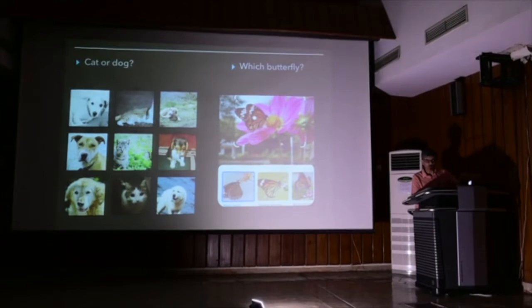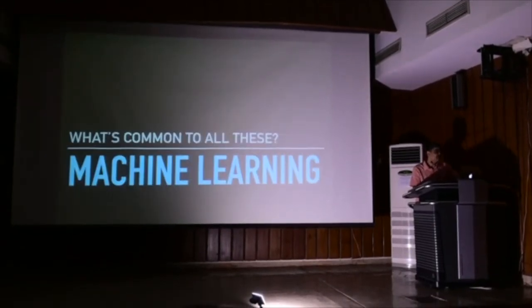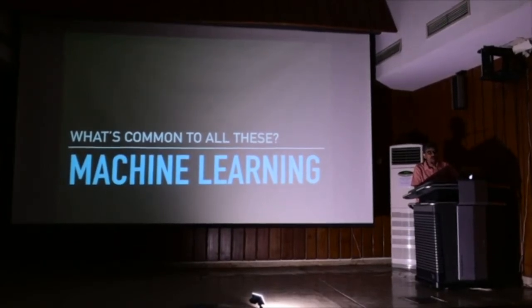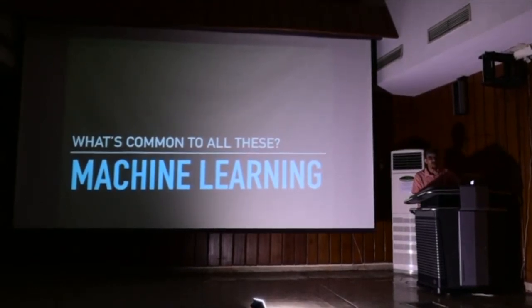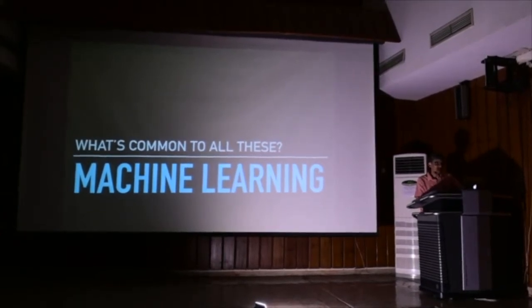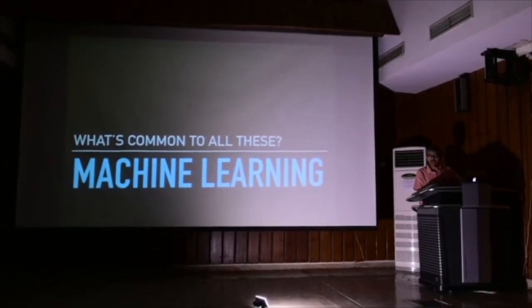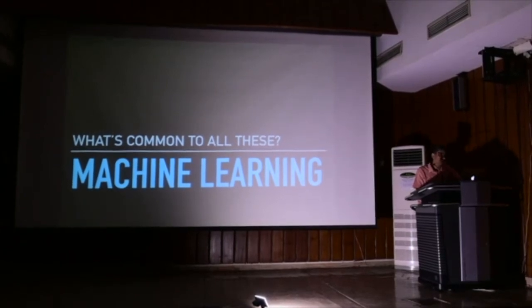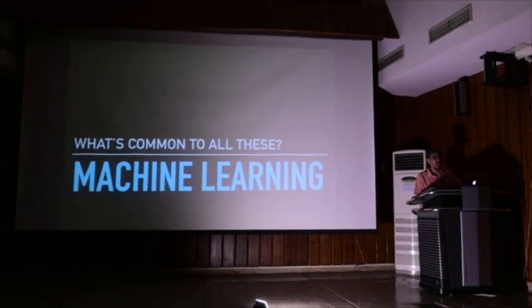And the question is, why am I telling you these stories? It's supposed to be a science talk. The question is, is there something common to all of these? And the answer is yes, and what is common to all of these is machine learning. So behind all of these, Google's suggestions, Amazon's recommendations, Google translation, classifying pictures into dogs or cats, or what kind of a butterfly it is. Behind all of these, what is working is machine learning.